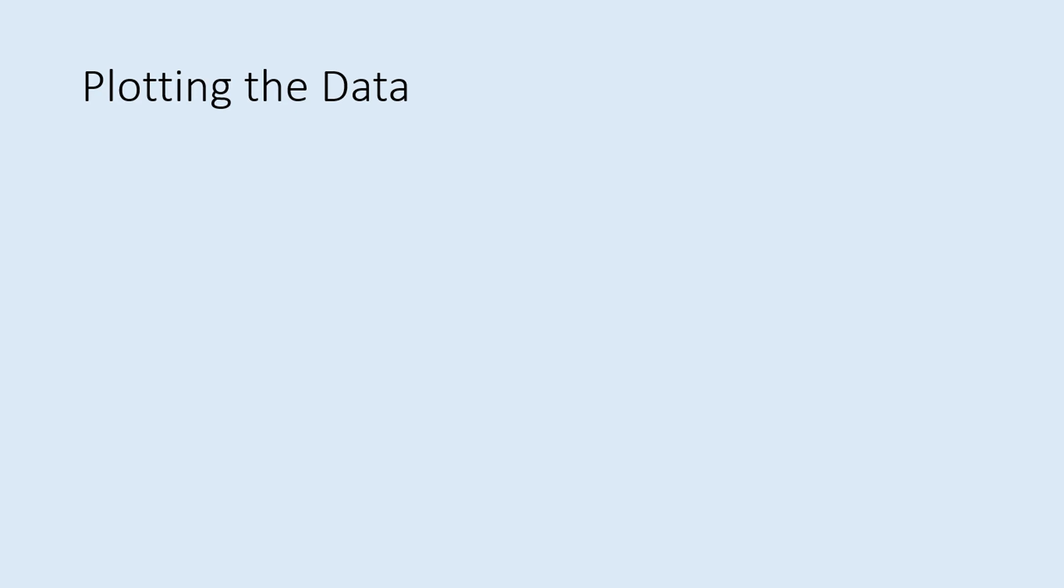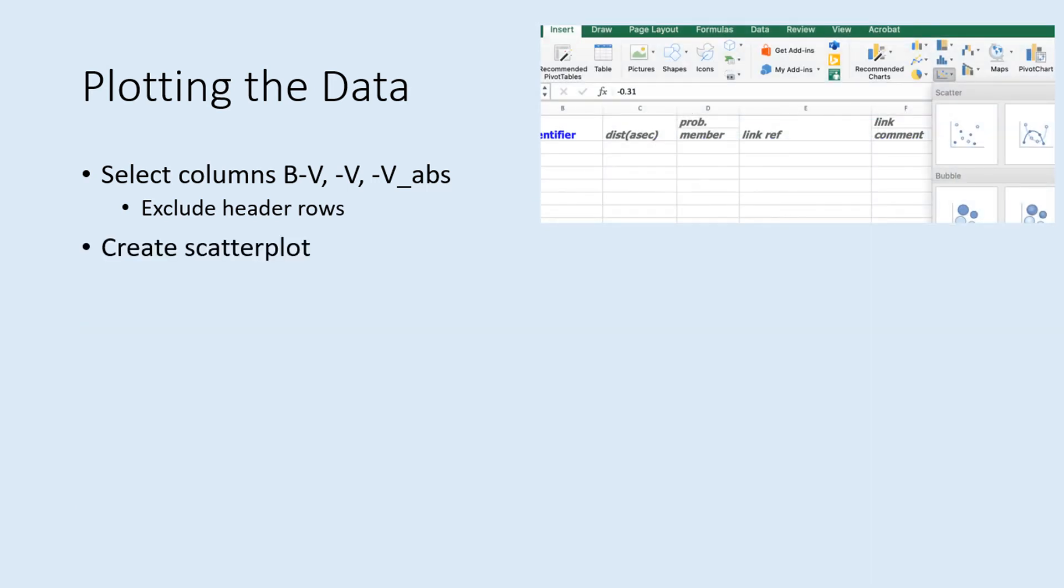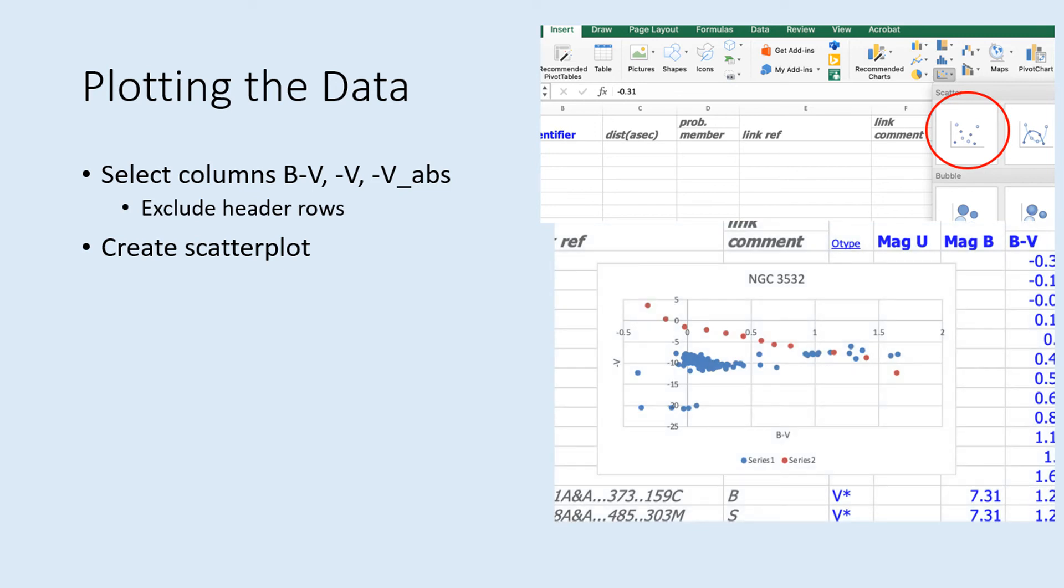Now it's time to create a scatter plot of your data. Start by selecting all three of the columns we've created: B minus V, minus V, and minus V abs, and include everything except the header rows and any rows that didn't have a B or V magnitude on the bottom. That means that some of the cells you're selecting will be blank. That's okay. Create a scatter plot using the spreadsheet's plotting function. Note that you don't want a plot that connects the dots. Label the axes on the chart with minus V and B minus V.